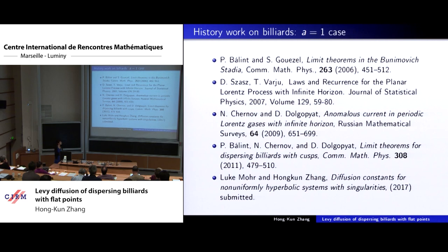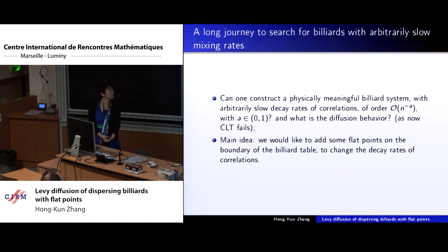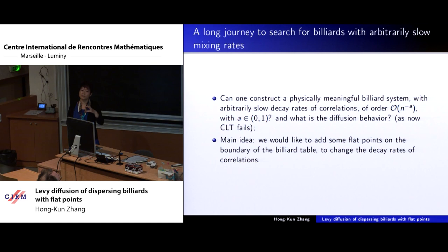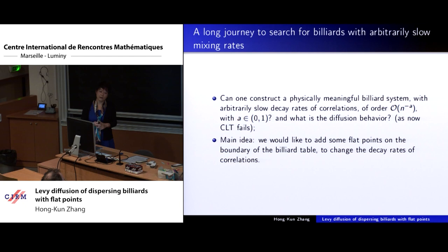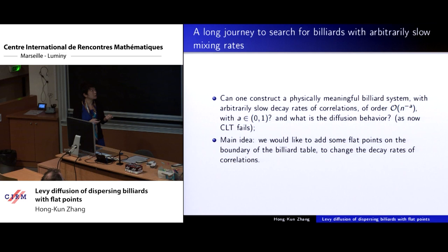The question left is to search for billiards which have arbitrarily slow decay correlations. A very naive idea is: if you have completely dispersing billiards where the boundary has no zero-curvature point, we expect fast decay correlation leading to classical diffusion. The question is: what if I add some points which have zero curvature? There are two types of billiards to consider.